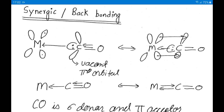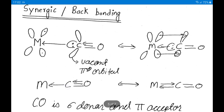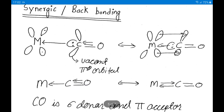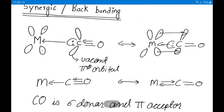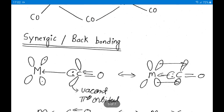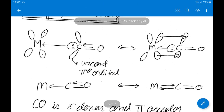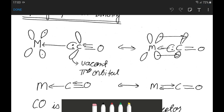As a consequence of back donation, the metal-carbon bond order becomes greater than 1 (between 1 and 2), and the C-O bond order becomes less than 3 (between 2 and 3). The C-O triple bond partially converts to a double bond because carbon can only form four bonds. So metal-carbon bond order is between 1 and 2, and carbon-oxygen bond order is between 2 and 3.